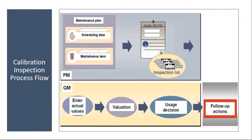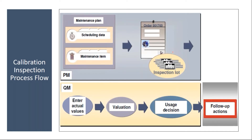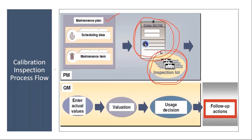The process is: as usual they create a maintenance plan in the PM module, and when we schedule it, it will generate an inspection. Normally in preventive maintenance, when we schedule the maintenance plan, our order comes automatically. But here, along with the order, there will be an inspection lot generated.